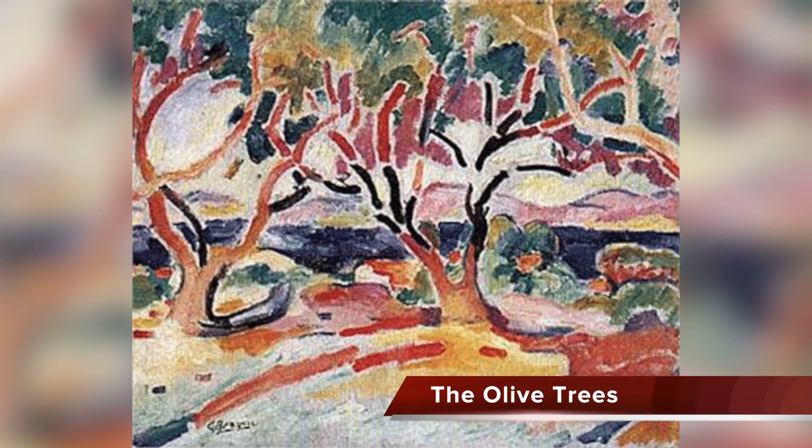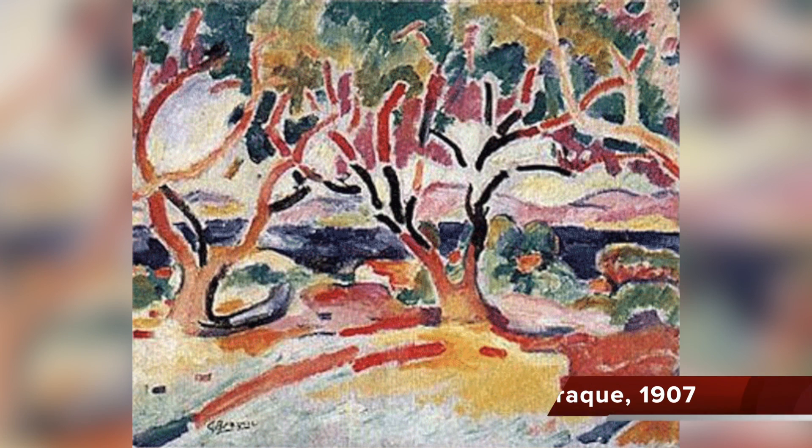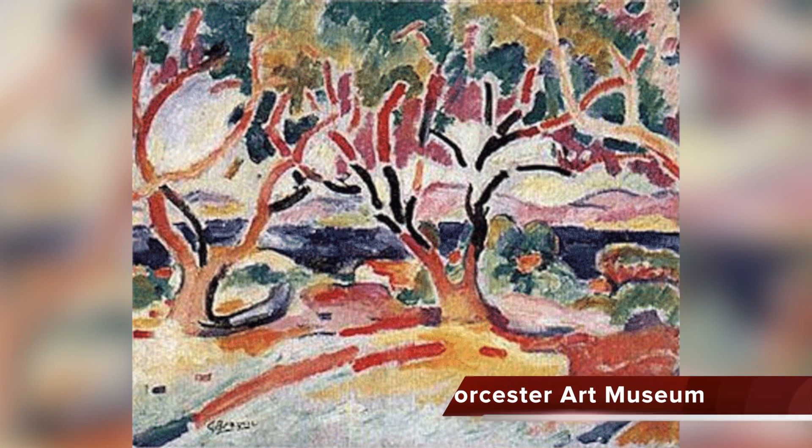Hello everyone. Today we'll be talking about a painting called The Olive Trees by Georges Braque, a French painter. He painted this in 1907 and today it is located at the Worcester Art Museum. What makes this painting so interesting? Well, I have to say that I even gave it my own title. I changed the title — my own title is The Inescapable Journey to Abstraction.